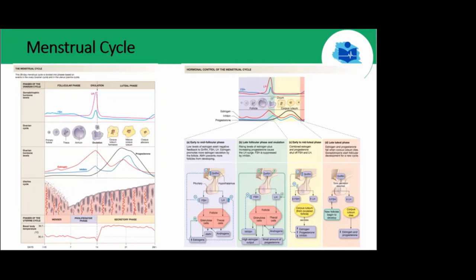The uterine cycle can also be divided into three phases. Menses: at the beginning of the follicular phase, the uterus sheds the layer from the prior cycle. The proliferative phase: the latter part of the ovary's follicular phase, where the endometrium begins to build itself up again in preparation for a potential pregnancy. The secretory phase: after ovulation, hormones from the corpus luteum convert the thickened endometrium into a secretory structure. The luteal phase of the ovarian cycle corresponds with the secretory phase of the uterine cycle. If no pregnancy occurs, the superficial layers of the secretory endometrium are lost during menstruation as the uterine cycle commences once again.